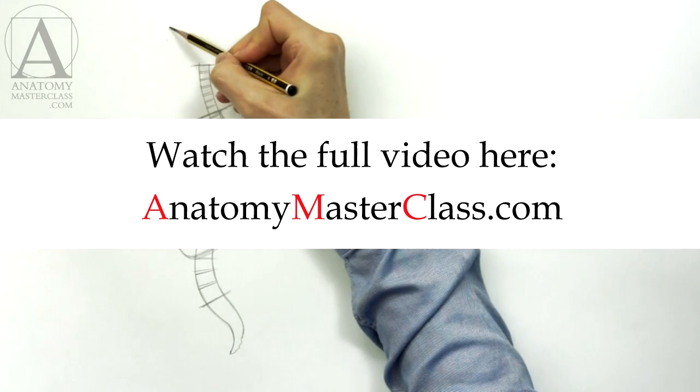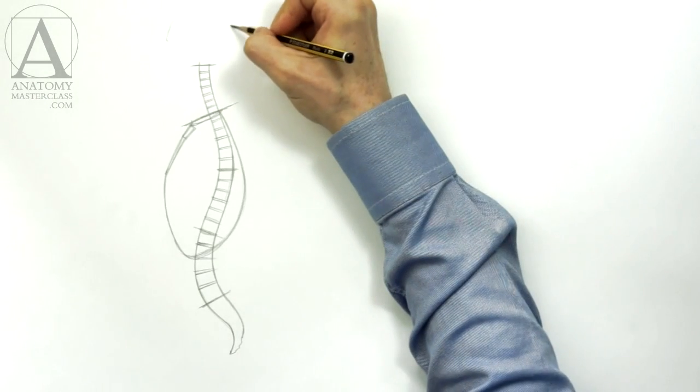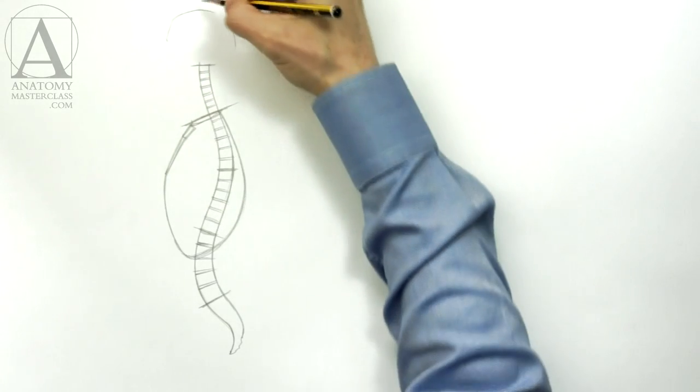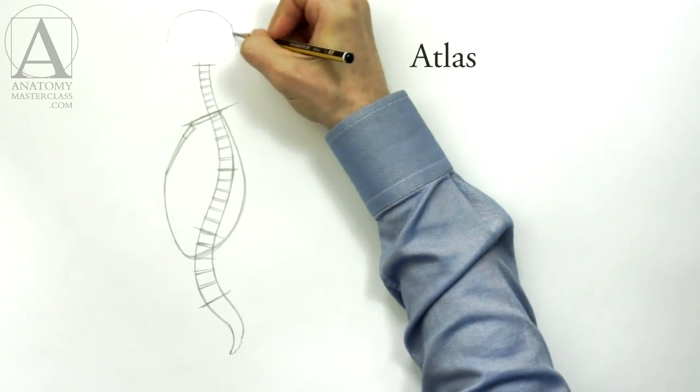I will draw a quick outline of the skull here. The human skull connects to the body via the first vertebra at the top of the spine. This vertebra is called the atlas.